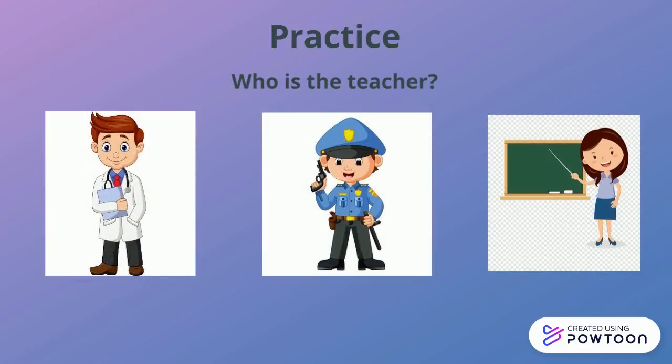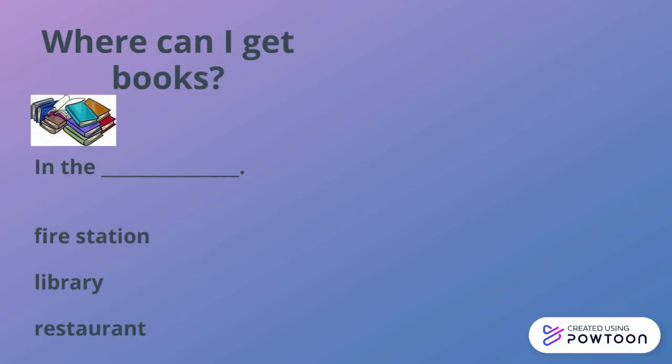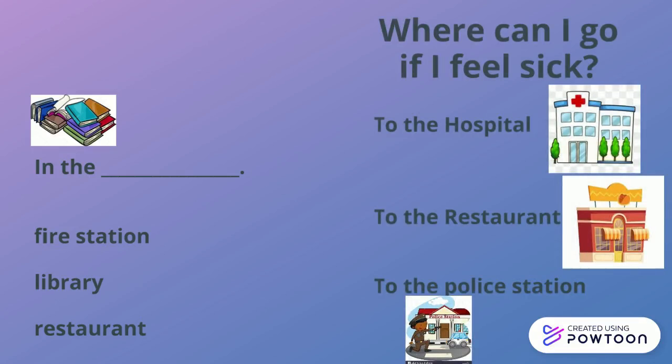Now we're going to make a small practice about community helpers, so you're going to see different pictures and you're going to identify the community helpers, their place of work, and the different things that you can get there or the things that you can do there.